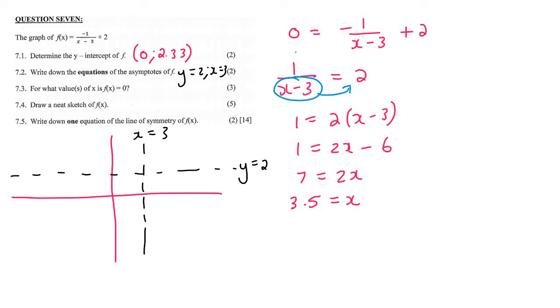Now question 7.4: draw a neat sketch graph. We've already put the asymptotes, x = 3 and y = 2. We had a y-intercept earlier which was 2.33, a little bit above 2, so that's probably there. We must fill the coordinates in, so that'll be (0, 2.33).